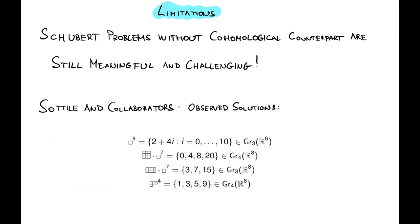This approach has severe limitations. Not every Schubert variety has a cohomological interpretation, and many Schubert varieties do not have fundamental classes at all. However, Schubert problems without such a cohomological counterpart are still very meaningful and challenging. Frank Sottile and his collaborators did many computer simulations and observed different possible numbers of solutions. None of those problems have any cohomological interpretation, yet as you can see, many possible solutions appear for these Schubert problems, along with interesting lower bounds and jumps. It would be really nice to have a general theory for these real Schubert problems.